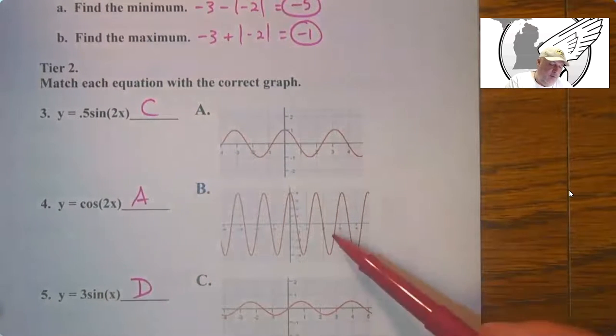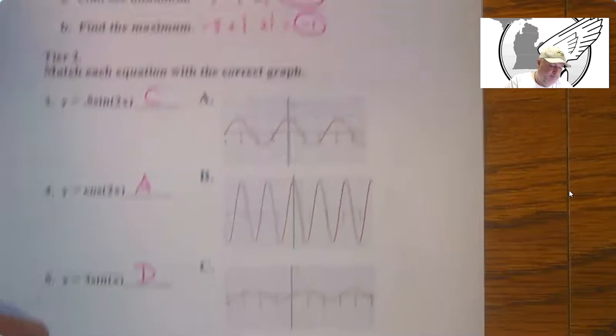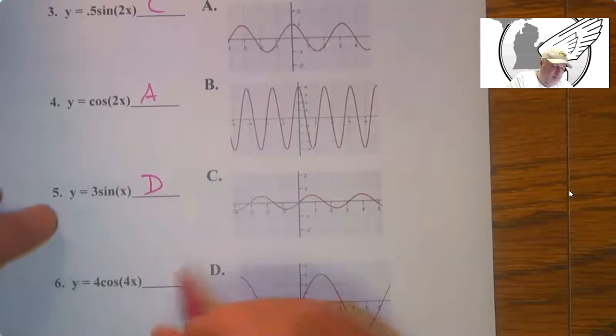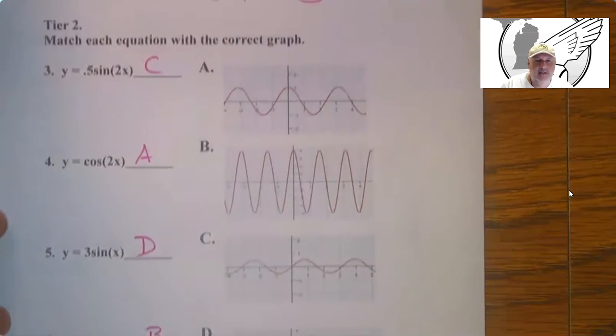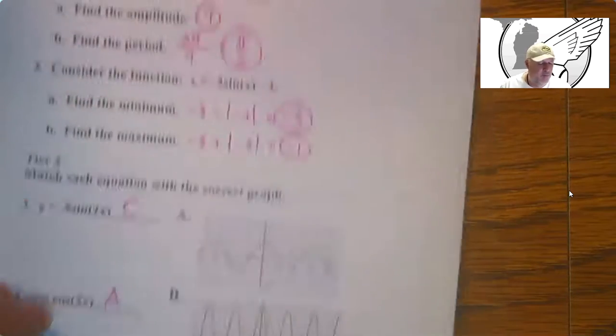And then this one has an amplitude of 4. And that's this graph here. So B is there. So analyze the amplitudes. I think on one of the practices I made them all the same function, which is very interesting.